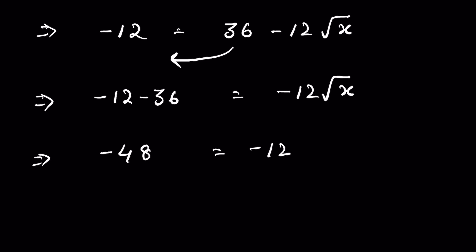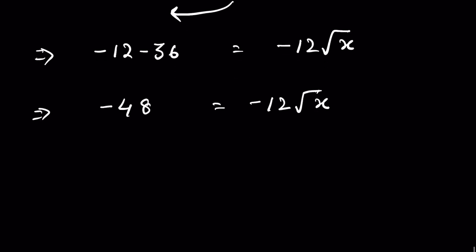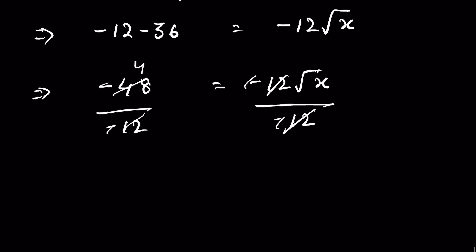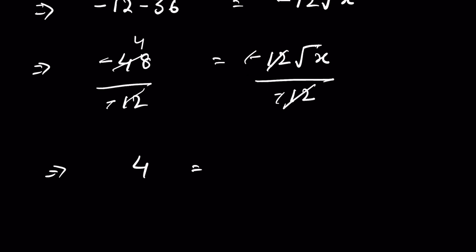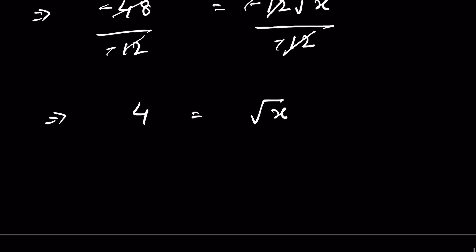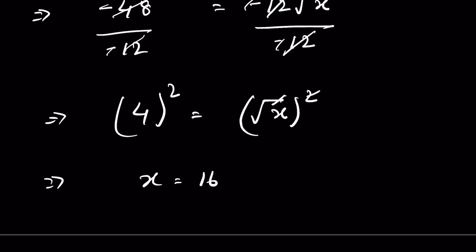Dividing both sides by minus 12, the negatives cancel and 12 cancels, giving 4 equals square root of x. To remove the square root, square both sides. Therefore x equals 16.